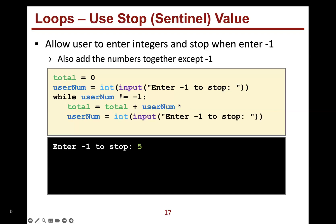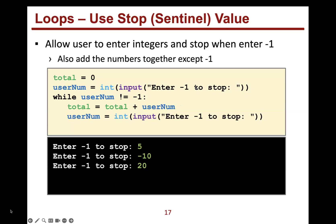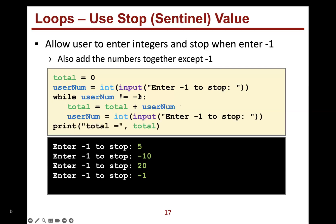For example: user enters 5, then negative 10, then 20, then negative 1. Negative 10 is not the stop value so it gets added to total. When the user finally enters negative 1, that value does not get added to total. The total is 5 plus negative 10 plus 20, which equals 15, and negative one is not included.